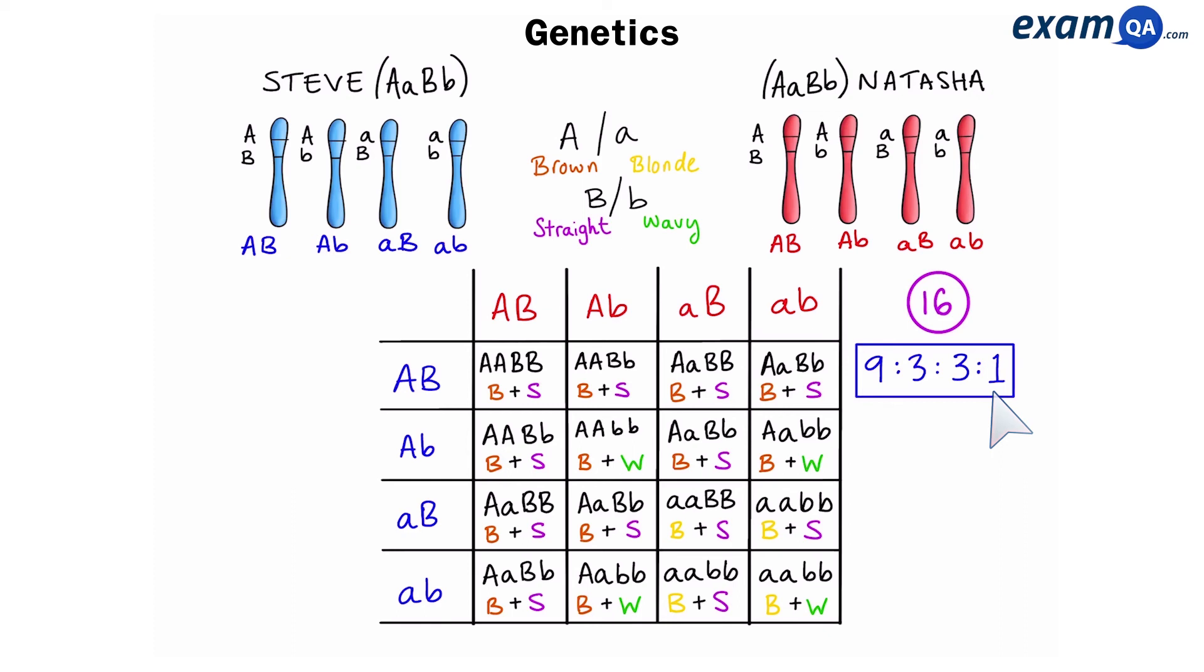So, what does this mean? 9 offspring have brown and straight hair. That means gene 1 is dominant and so is gene 2. For example, big A, big A, big B, big B. Or, big A, small A, big B, small B. In both scenarios, gene 1 is dominant and so is gene 2.